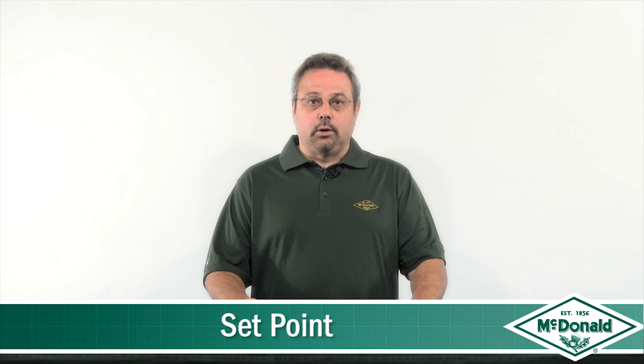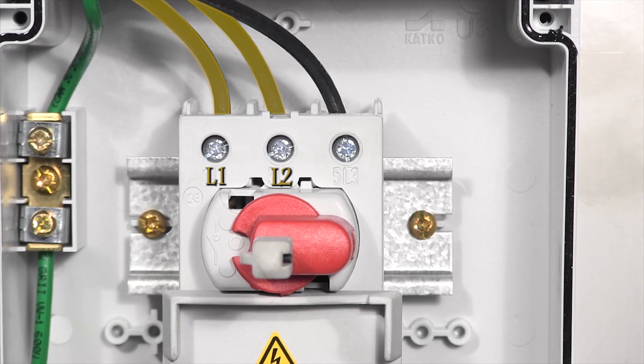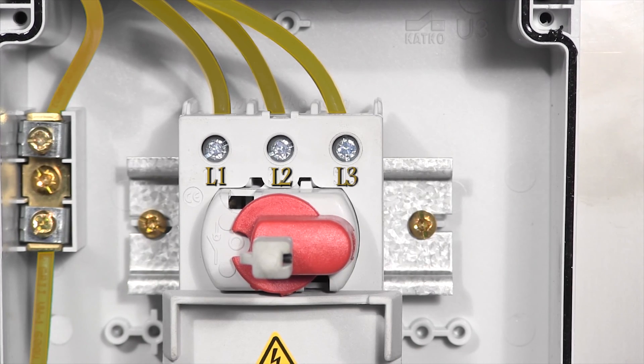The incoming power is attached to the L1, L2, L3, and ground terminals inside the disconnect box. Use the wire gauge as specified in the wiring diagrams.